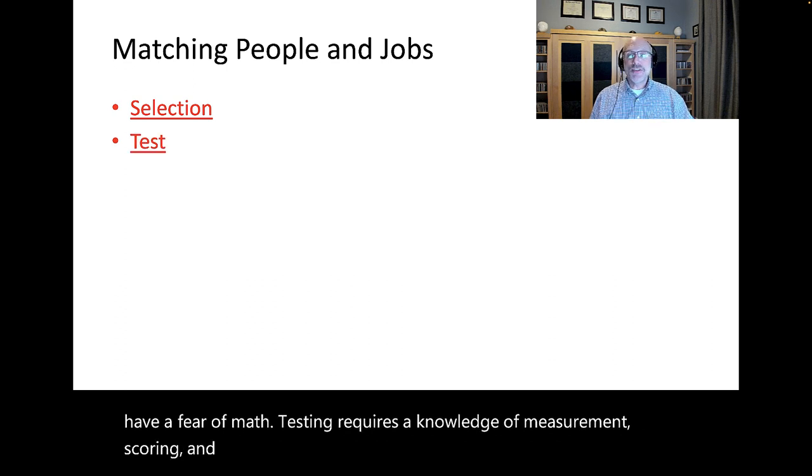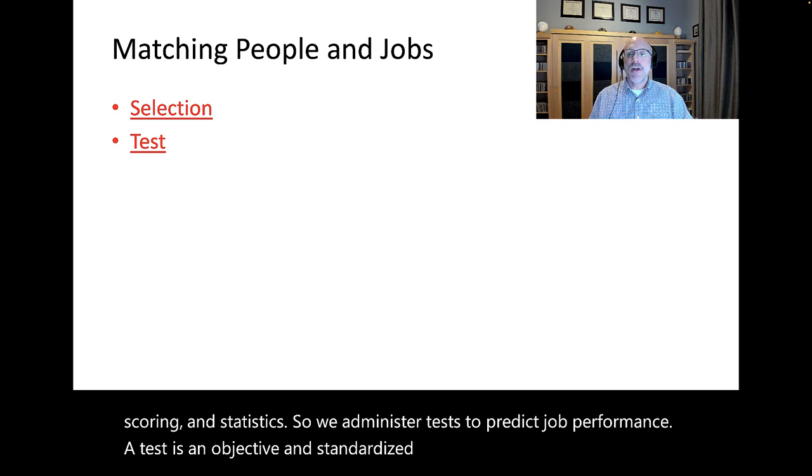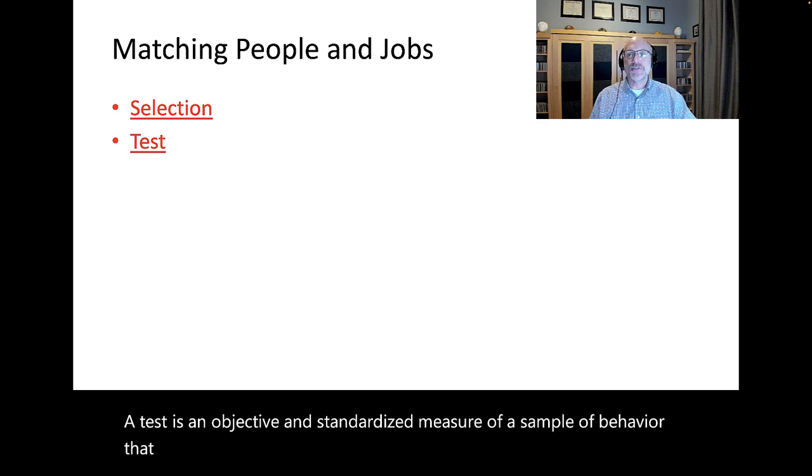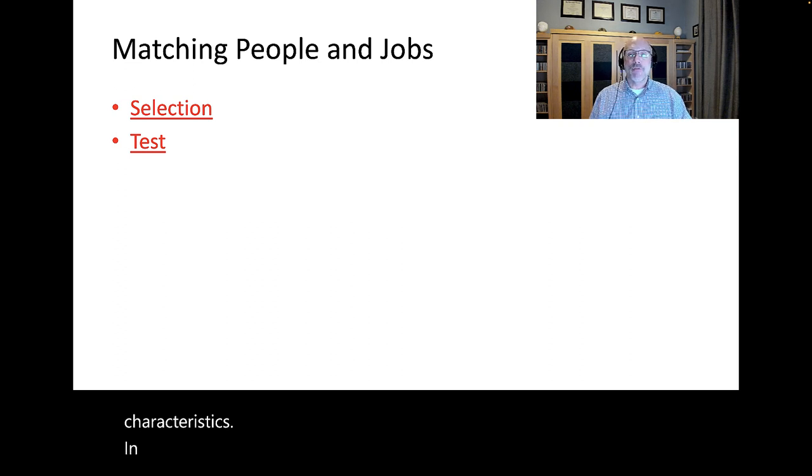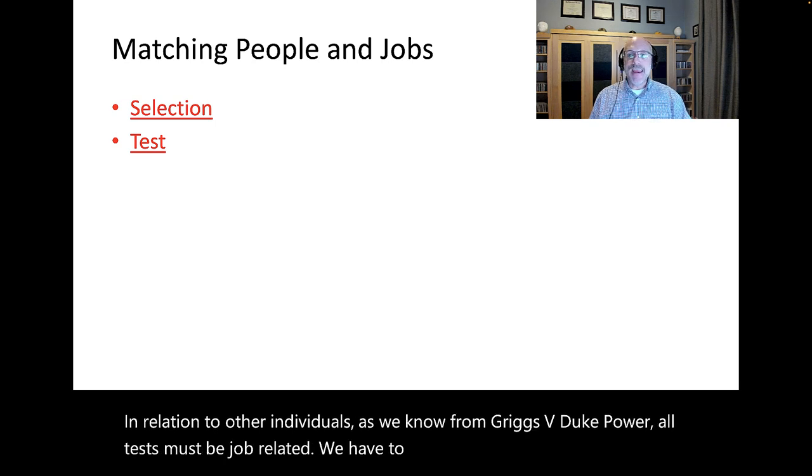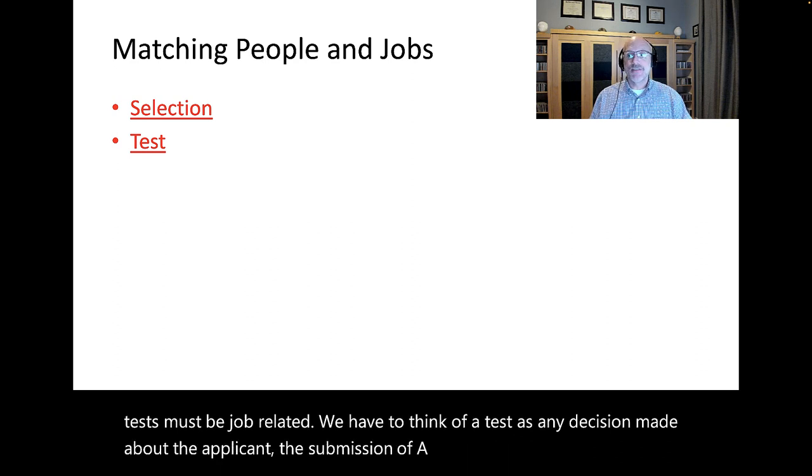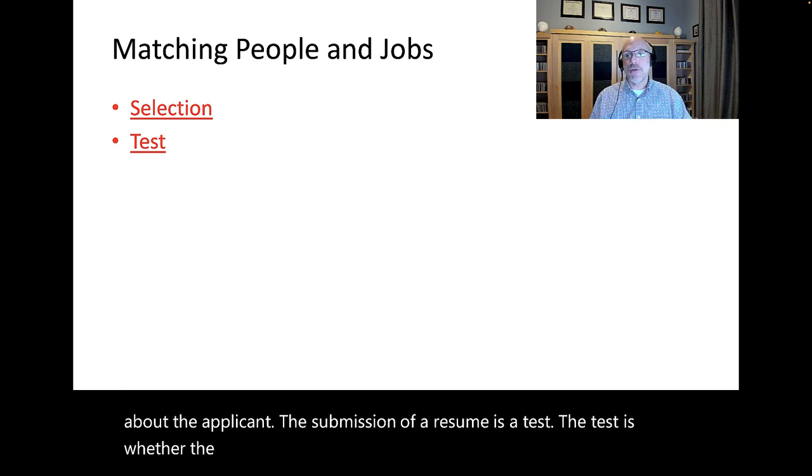So we administer tests to predict job performance. A test is an objective and standardized measure of a sample of behavior that is used to gauge a person's knowledge, skills, abilities, and other characteristics in relation to other individuals. As we know from Griggs v. Duke Power, all tests must be job-related. We have to think of a test as any decision made about the applicant. The submission of a resume is a test.